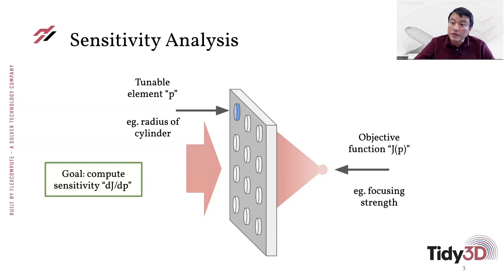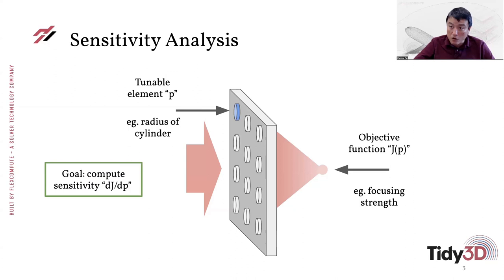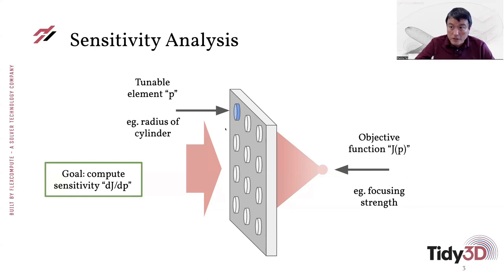Knowing the sensitivity is very important. If you're trying to implement these devices experimentally, you probably want a device with low sensitivity. Alternatively, you may want a device that you can adjust after fabrication — for example by changing the refractive index of each individual element — in which case you may actually want higher sensitivity. In any case, the sensitivity is the derivative of the objective function with respect to any of the parameters you are interested in.